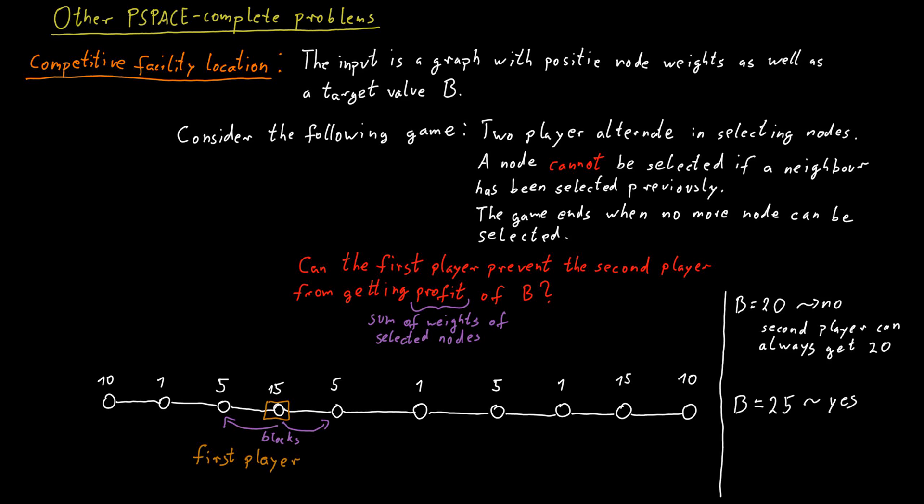But let's say the second player does not choose either the 15 or the 10 at the very end of the line. In that case, the first player in the next move can pick the vertex with weight 10 at the end of the line and therefore also block access to the vertex that has weight 15.